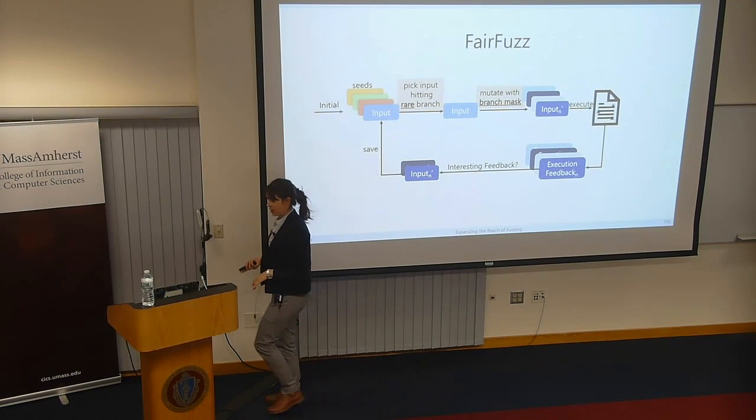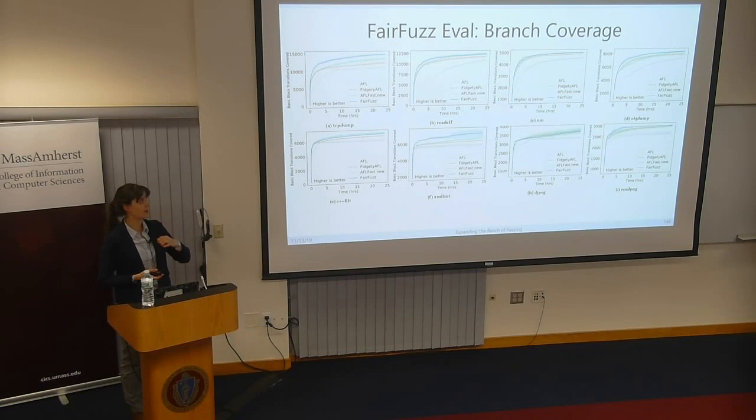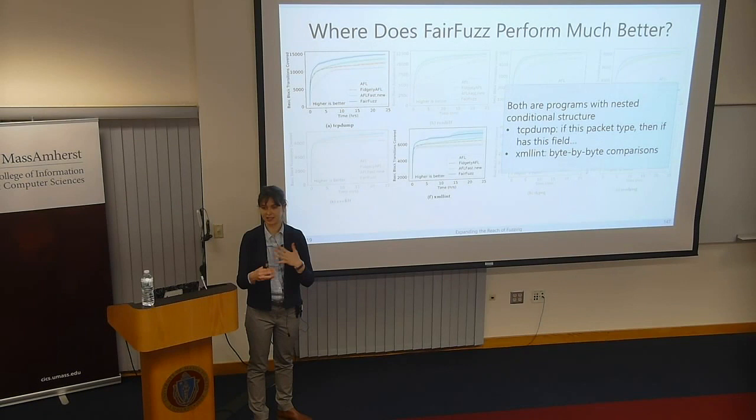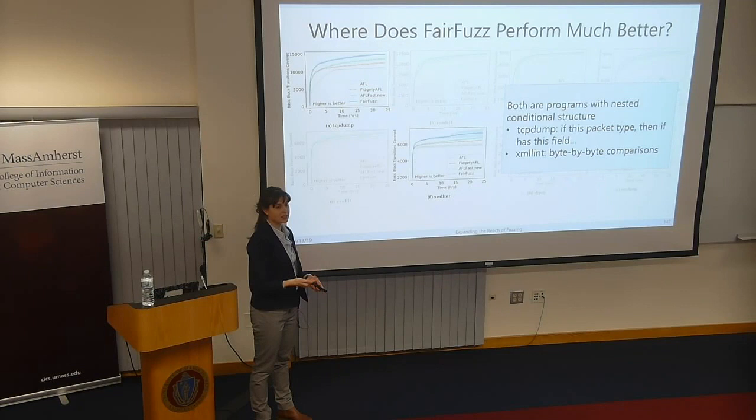Once you have the branch mask, you only generate mutants at allowed positions, hopefully still hitting that rare branch and getting deeper into the core logic. The neat thing is you don't need any extra instrumentation — you just observe the dynamic behavior of the program, which fuzzers already do. When we evaluated FairFuzz, it generally had the upper hand in branch coverage compared to all the best variants of AFL, especially for programs with lots of nested conditional structure like packet parsers.